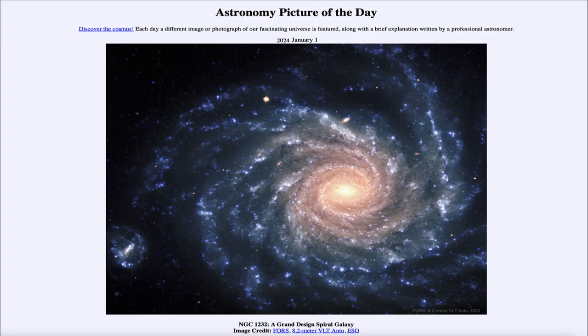Greetings and welcome to the astronomy picture of the day podcast. Today's picture for January 1st of 2024 is titled NGC 1232, a grand design spiral galaxy.